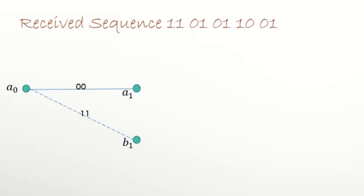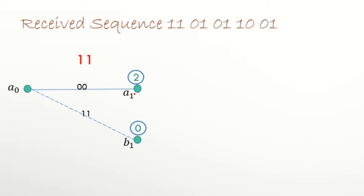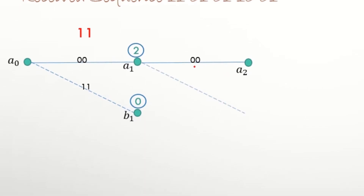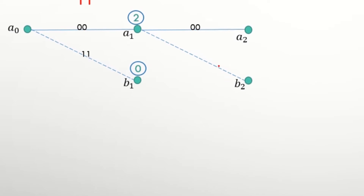Next we take the first received pair which is 11, and compare it with the two codes 00 and 11. Comparing 11 with 00: both bit positions differ, so the Hamming distance is 2. Comparing 11 with 11: there is no difference, so the Hamming distance is 0. Now from state A1, if the message bit is 0 it goes to A2 producing code 00, and if it is 1 it goes to B2 producing 11.